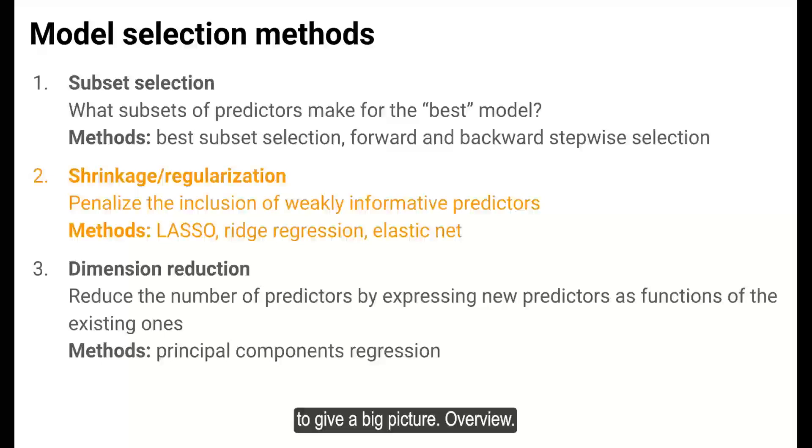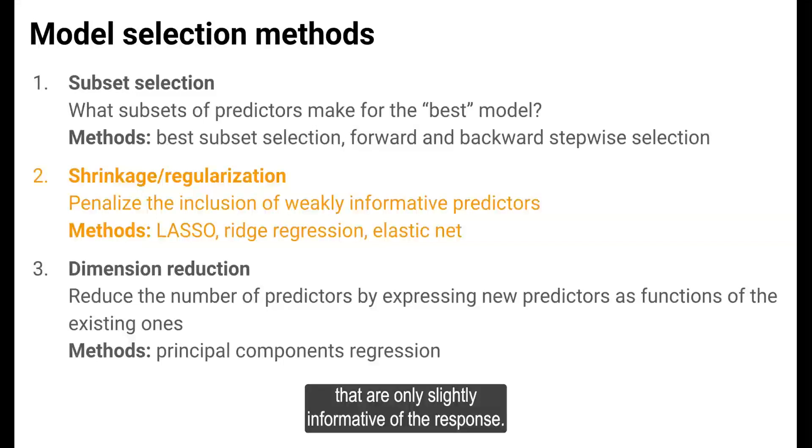To give a big picture overview, these methods mathematically penalize the inclusion of predictors that are only slightly informative of the response. The LASSO, ridge regression, and elastic net methods are commonly used shrinkage methods.